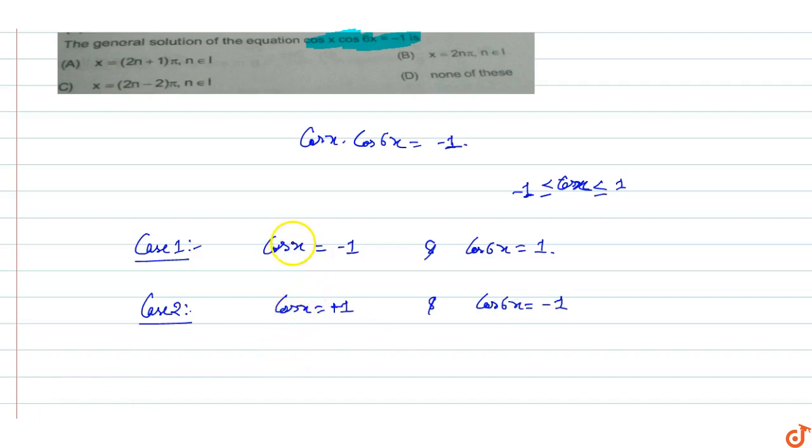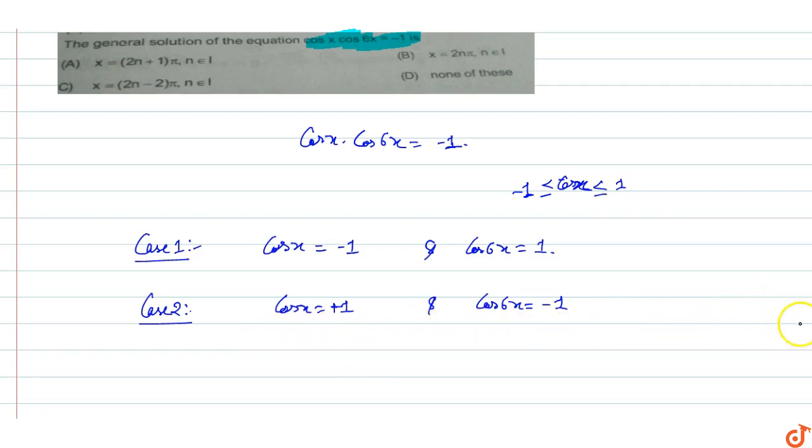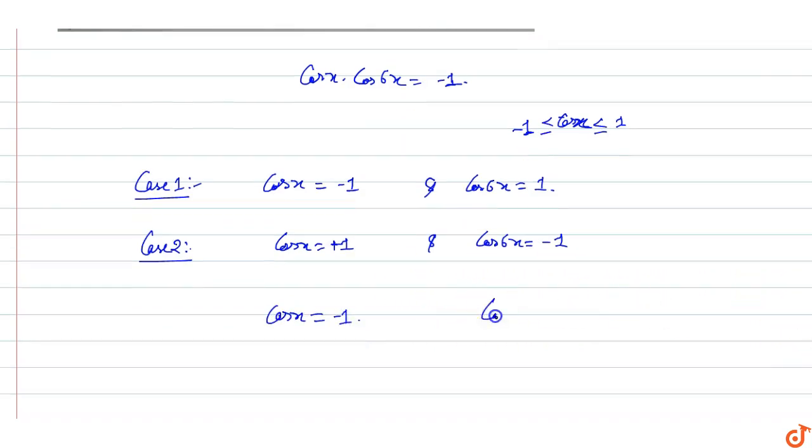When cos x value is minus one, x can take values as odd multiples of π. And cos 6x equals one always gives positive values because 6x is always even multiples of π. So here, cos x equals minus one and cos 6x equals one.